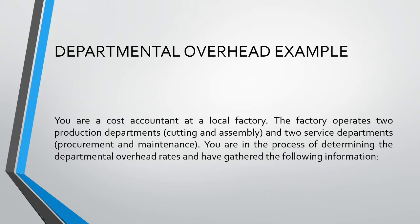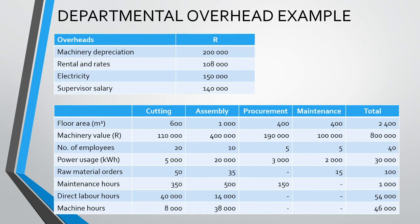Let us now have a look at an example. We are the cost accountant at a local factory. This factory operates two production departments — cutting and assembly — and also has two service departments: procurement and maintenance. We are in the process of determining the departmental overhead rates and have gathered the following information. Our first table provides us with our overhead costs for the factory in total. Our second table provides some basic information about each department, which we can use to allocate the overhead costs to the departments.